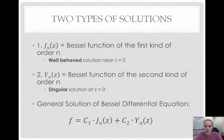Here are the two types of solutions. j sub n of z is the Bessel function of the first kind of order n, and this one is the well-behaved solution near z equals zero.